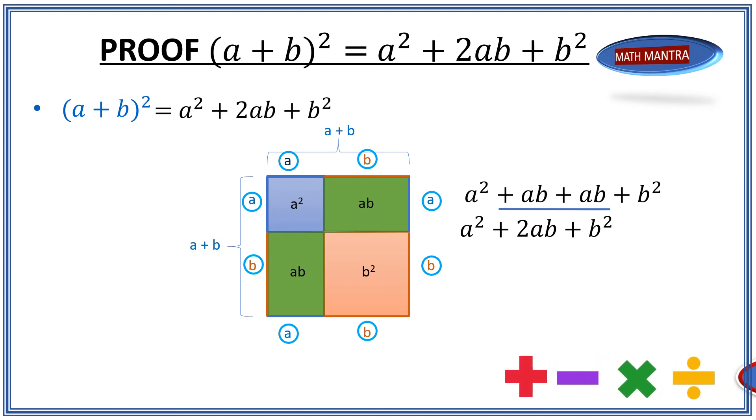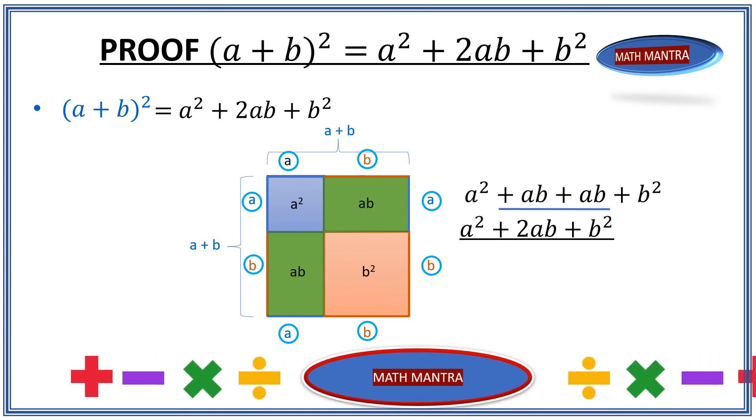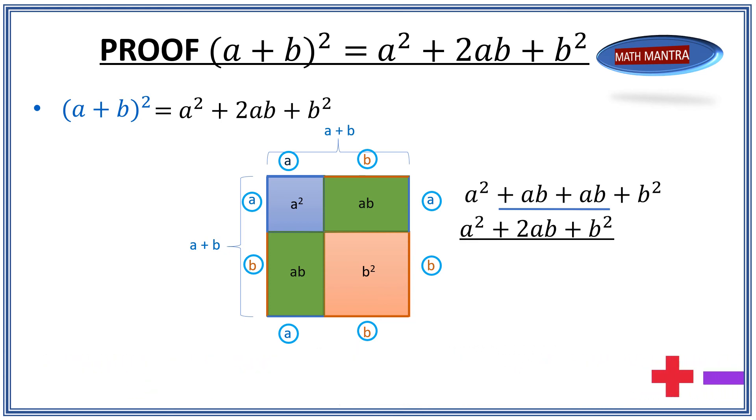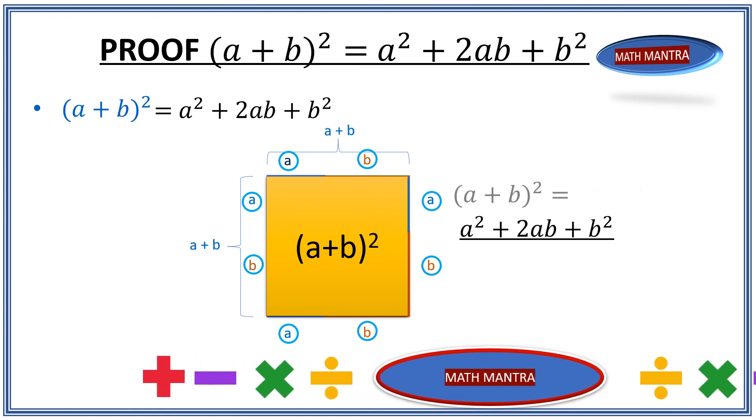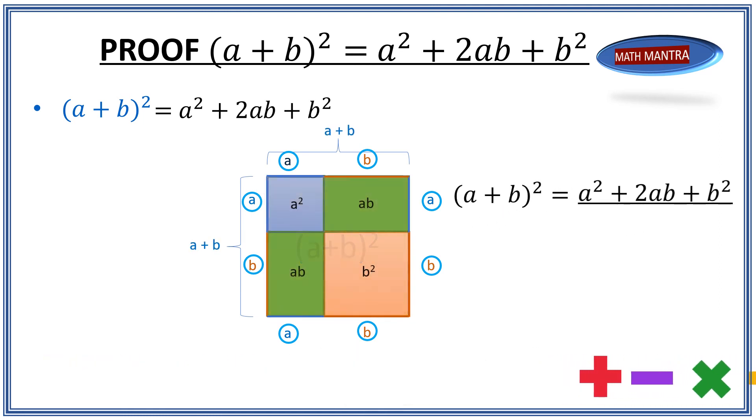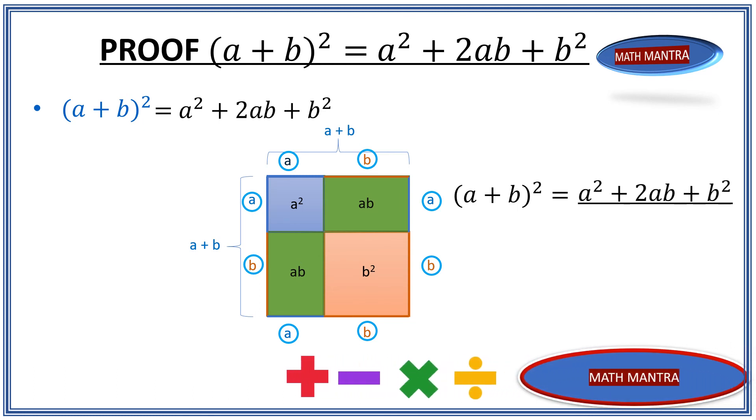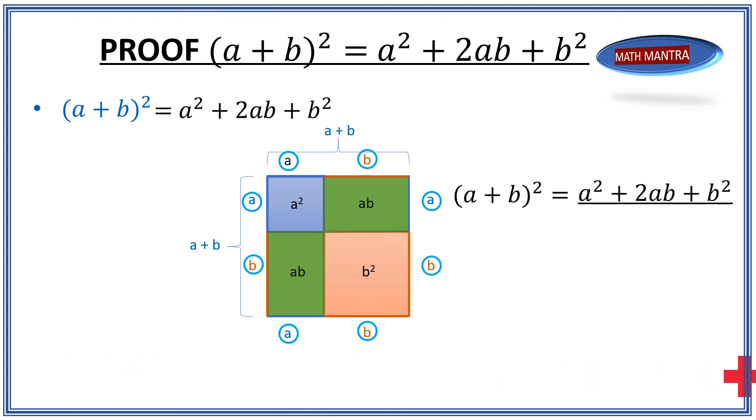So the right side of the equation becomes a² + 2ab + b², and the entire area should be the same as the area of the square with side a plus b, right? So (a + b)² is equal to a² + 2ab + b². Simple, isn't it? So hope you liked this video. If you like these kinds of videos, please subscribe to our channel.